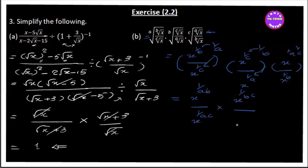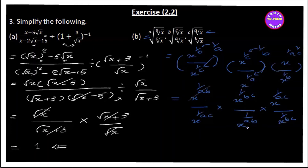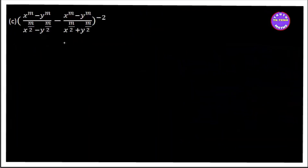Combining the index expressions: x to the power 1/(AB) times x to the power 1/(AC) times x to the power 1/(BC). This simplifies step by step. The result will be x to the power combining these fractions, ultimately giving x to the power 1/(AB) combined. Then we conclude with x power 3 and x power 2.